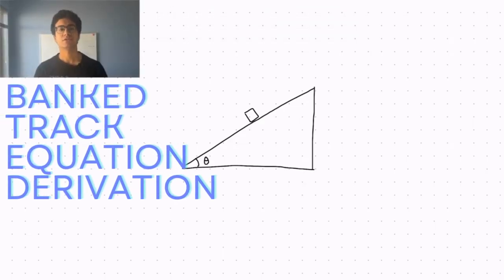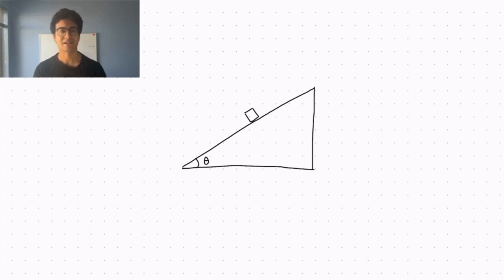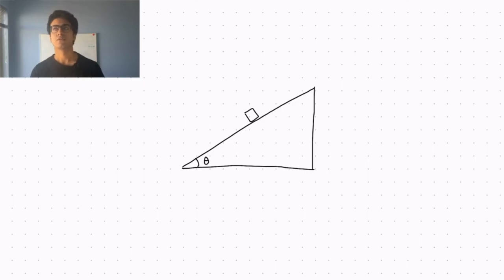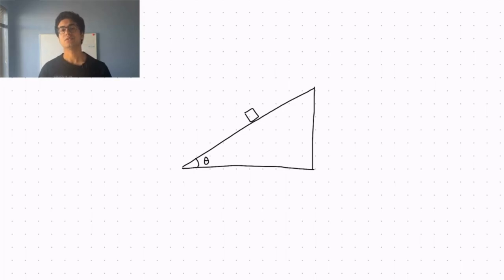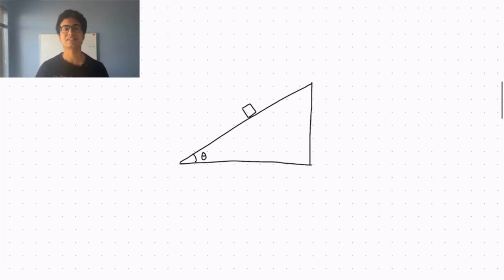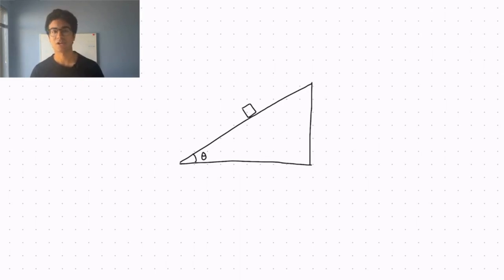In the notes page you were introduced to the concept of an object traveling in circular motion around a banked track, and you were also shown how to derive an equation commonly used for questions which do not take into account friction. In this video we will tackle the same concept, but instead we will derive an equation which does take into account friction.